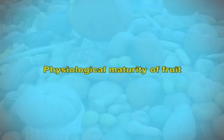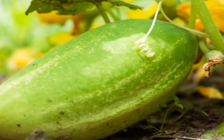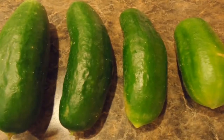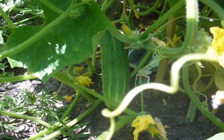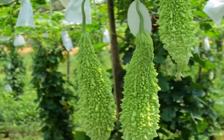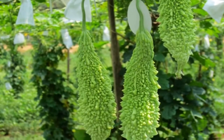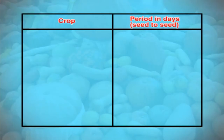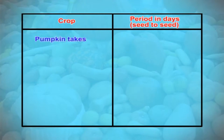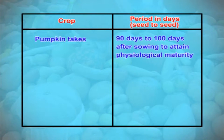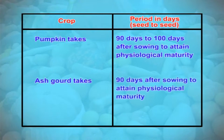Now coming to physiological maturity of the fruit. If crops are raised for seed production, the fruit has to be harvested when it attains physiological maturity. Physiological maturity symptoms differ for each cucurbit species and are influenced by environmental factors and crop management practices like trailing. The maturity period is shorter in summer compared to the rainy season. Bitter gourd takes 65 days after sowing, snake gourd takes 65 days, pumpkin takes 90 to 100 days, and ash gourd takes 90 days after sowing to attain physiological maturity.